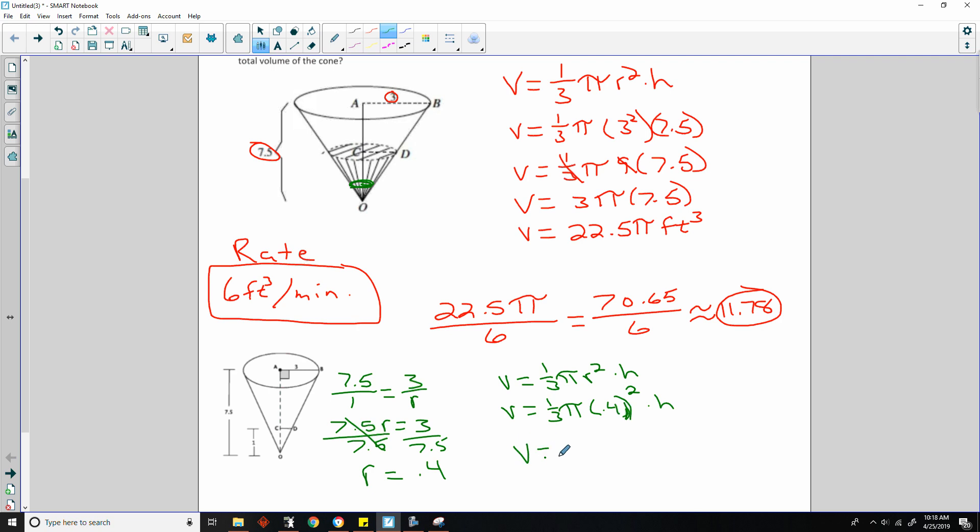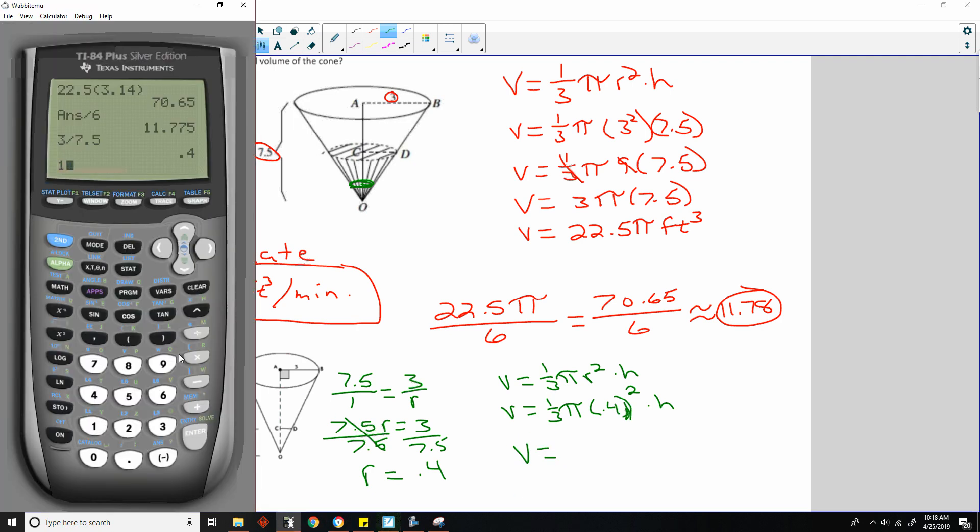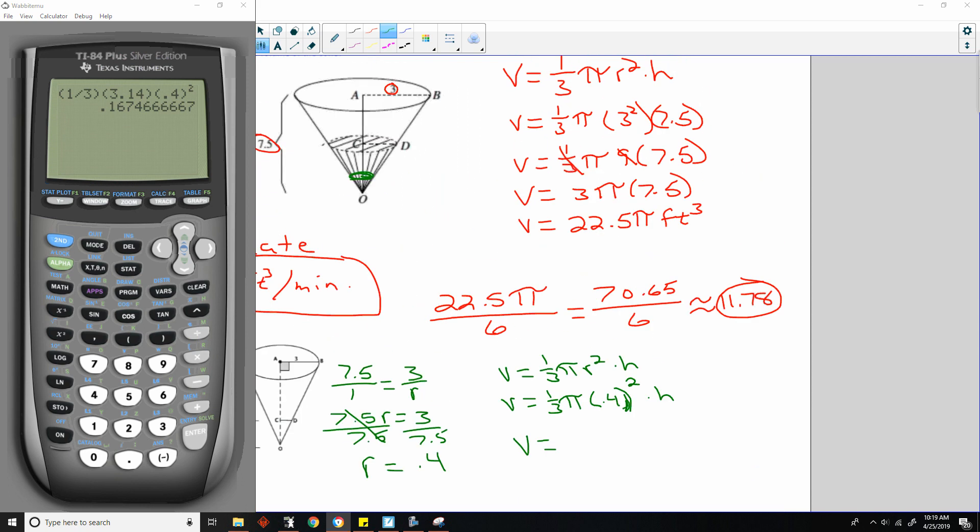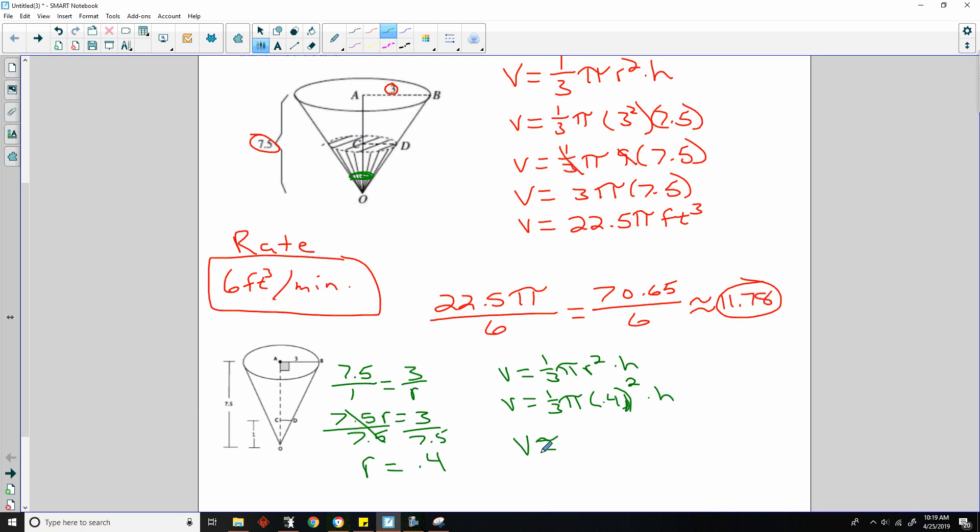So it's 0.4 squared times height. Alright. Well, that would be V equals, and let's just use the calculator. 1 divided by 3. I like to put those in parentheses. 1 divided by 3 times 3.14 times 0.4 squared, which is 0.16. And times the height, which is 1. So I don't need to multiply by 1. It will change nothing. I hit enter, and I got 0.167. So the volume, let's do an approximation symbol. 0.167.